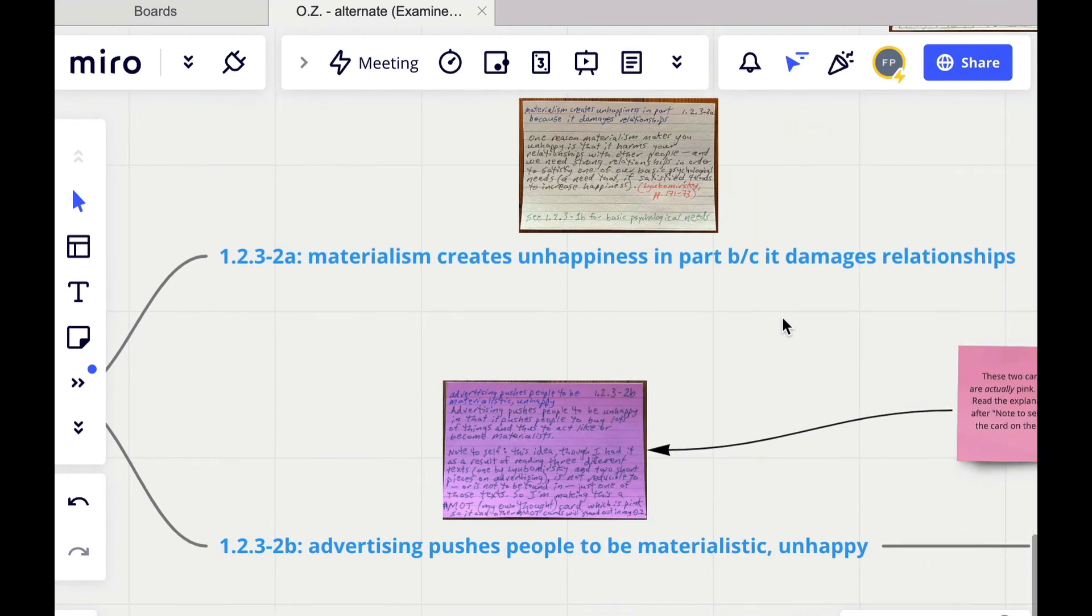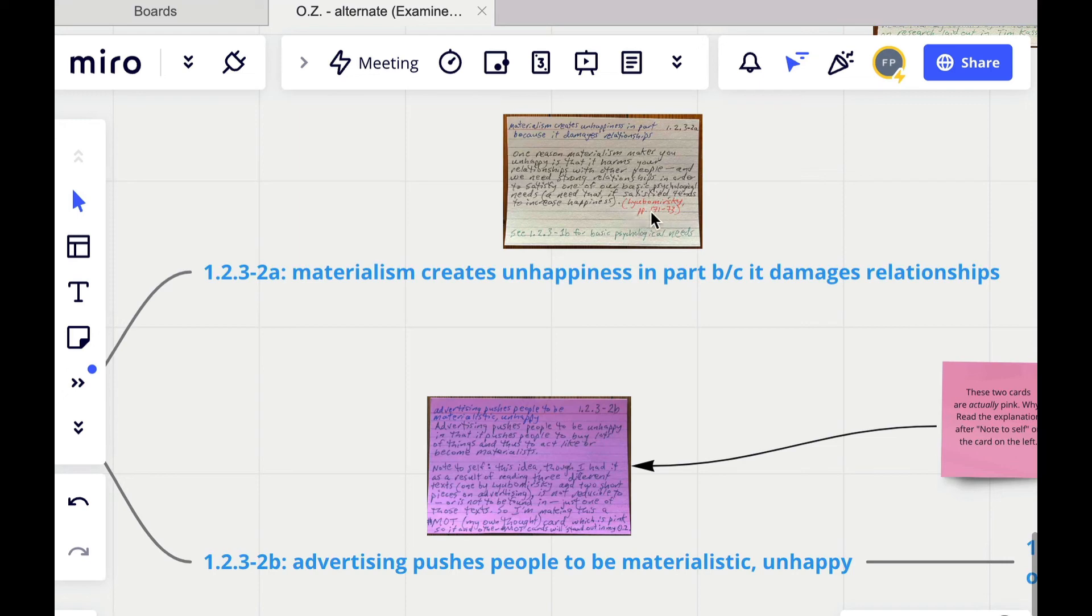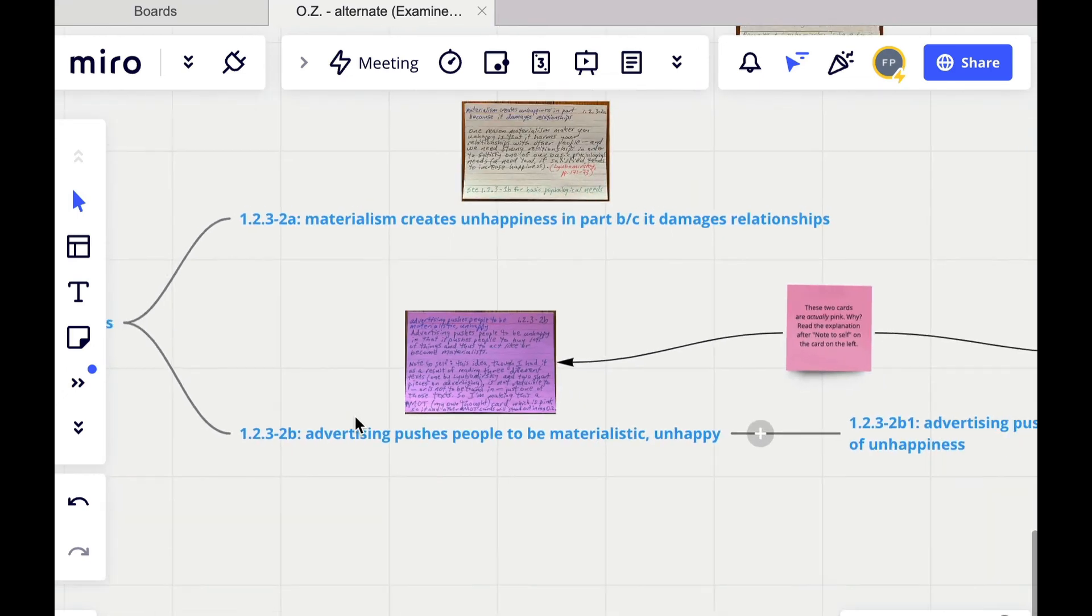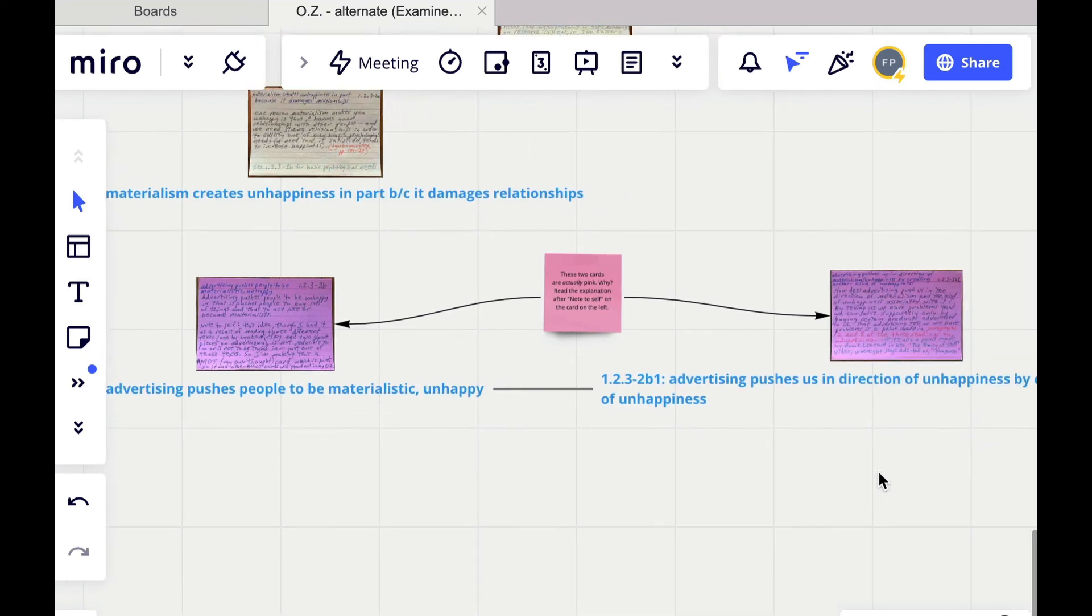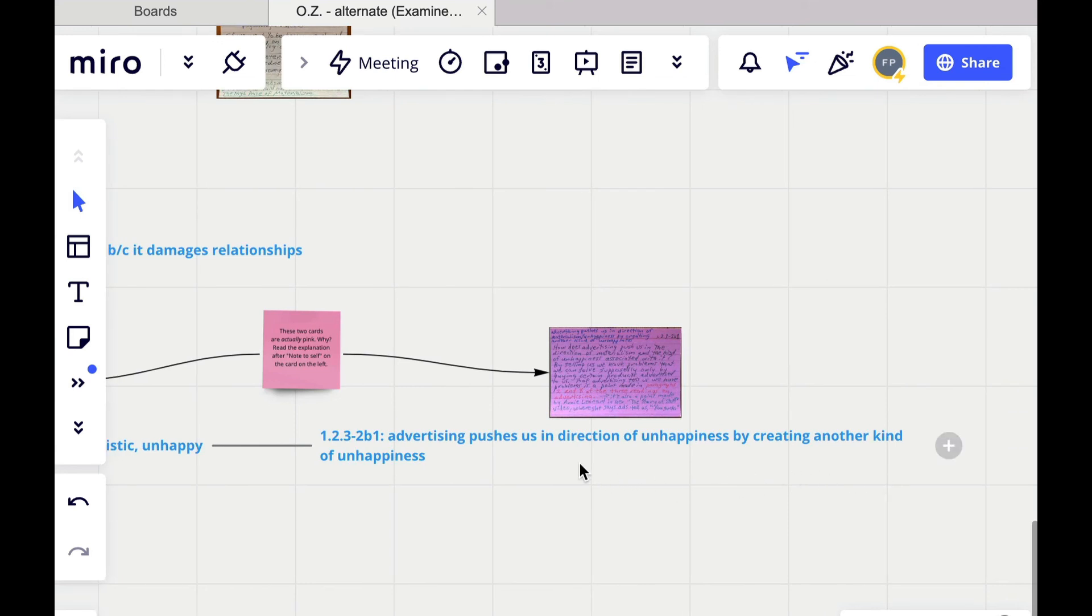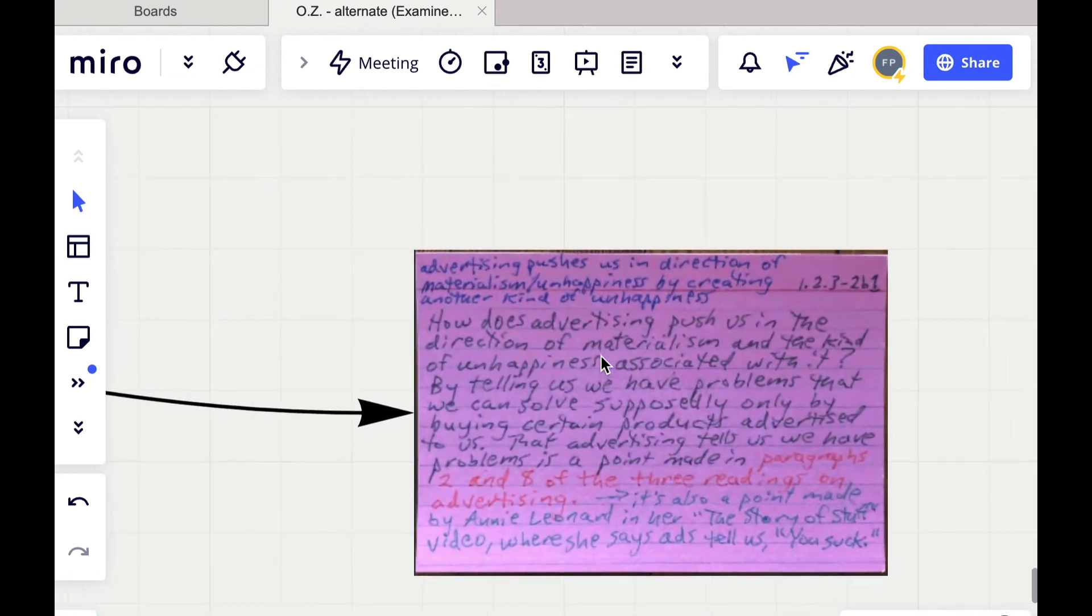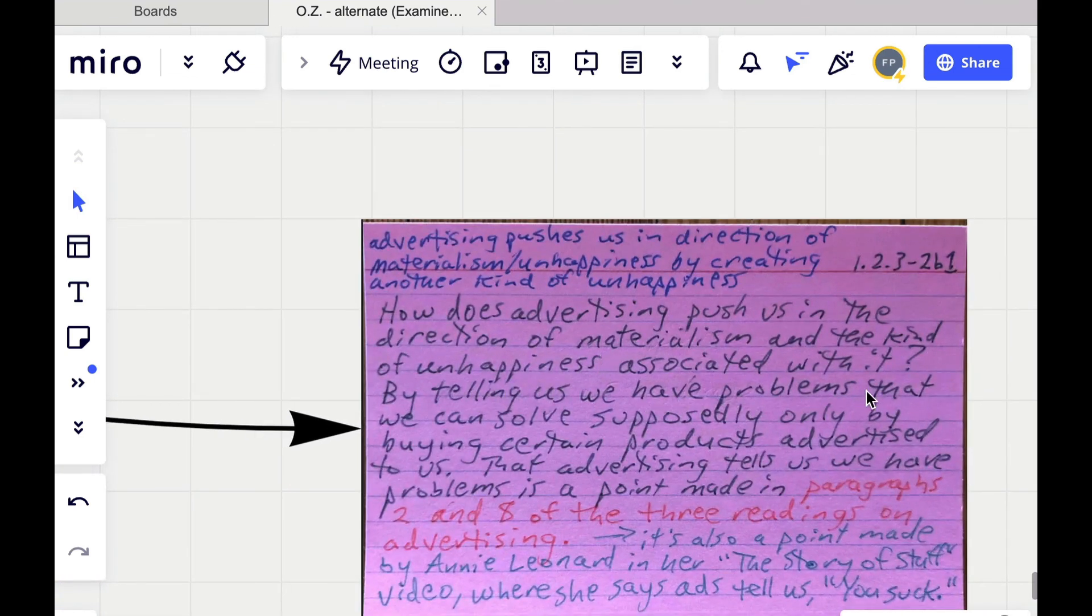And then linked to this idea that materialism leads to unhappiness are these two ideas here. So materialism creates unhappiness in part because it damages relationships. I'm drawing on an idea from Lyubomirsky. But then down here, we see the two cards that are about advertising. So this first card talks about how advertising pushes people in the direction of being materialistic and therefore in the direction of being unhappy. And then as a continuation of this idea, I have a card here that basically says that advertising pushes us in the direction of unhappiness by creating another kind of unhappiness. And that other kind of unhappiness is the unhappiness that is created when advertisements tell us that we have problems that we can solve supposedly only by buying certain products advertised to us. So advertising can lead to unhappiness insofar as it leads people to act materialistically, which mountains of research show is not a very good route to happiness. And in addition, advertising can make people unhappy by telling them they have problems that maybe they don't actually have.